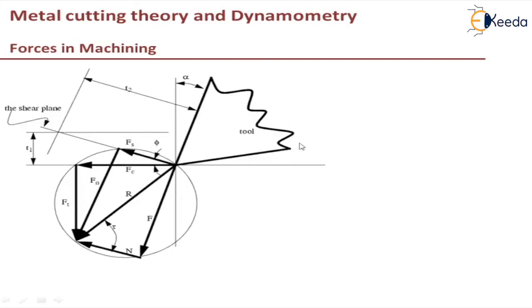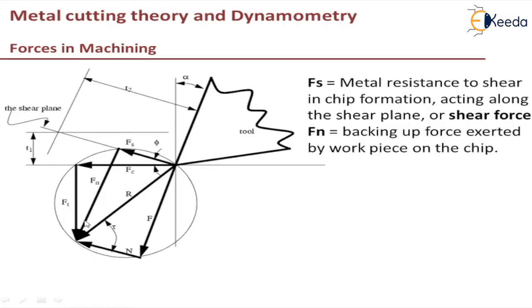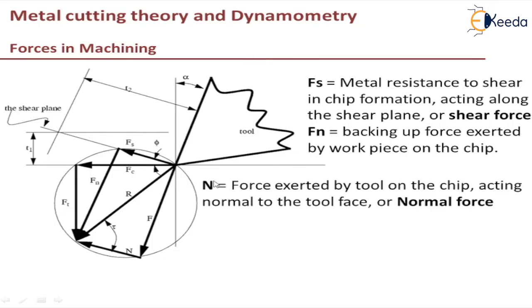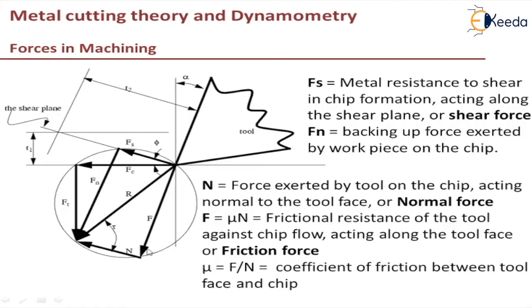These are the forces in machining. First, we have a shear force acting along the shear plane, represented as Fs in this figure. Perpendicular to it, we have a backing-up force exerted by the work piece on chip. We have a normal force N which is perpendicular to the frictional force F, and then the frictional force along the tool rake face. Mu is the ratio of frictional force and normal force — the coefficient of friction between tool face and the chip.